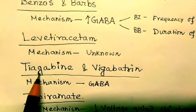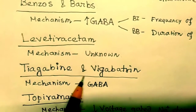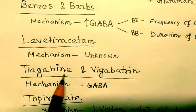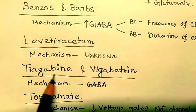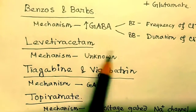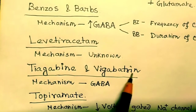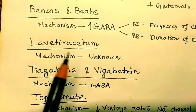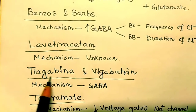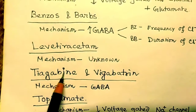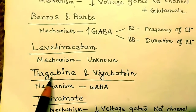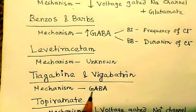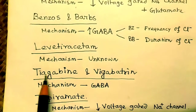The next ones are tiagabine and vigabatrin. Notice that both names contain 'gaba' — tiagabine and vigabatrin. So remember, the mechanism for both tiagabine and vigabatrin is GABA-related.